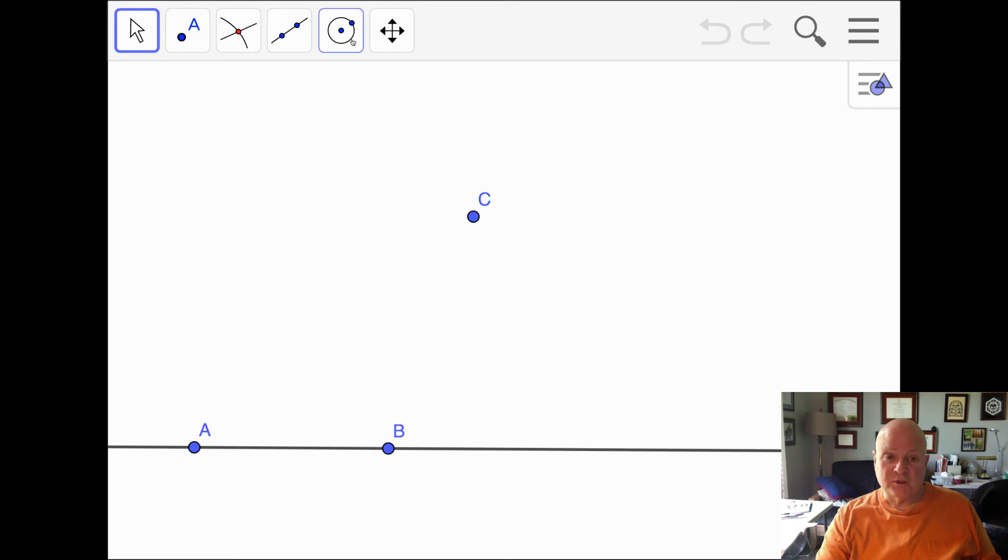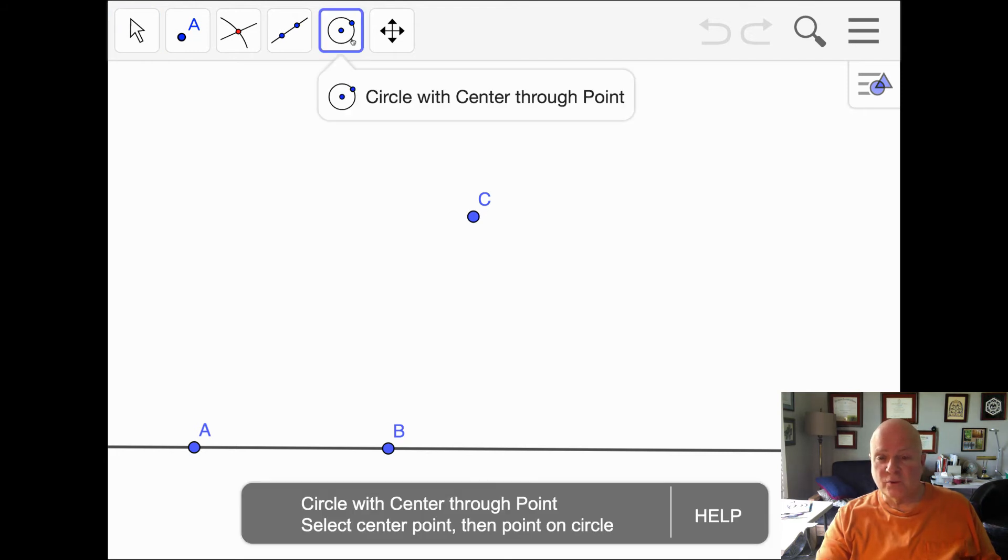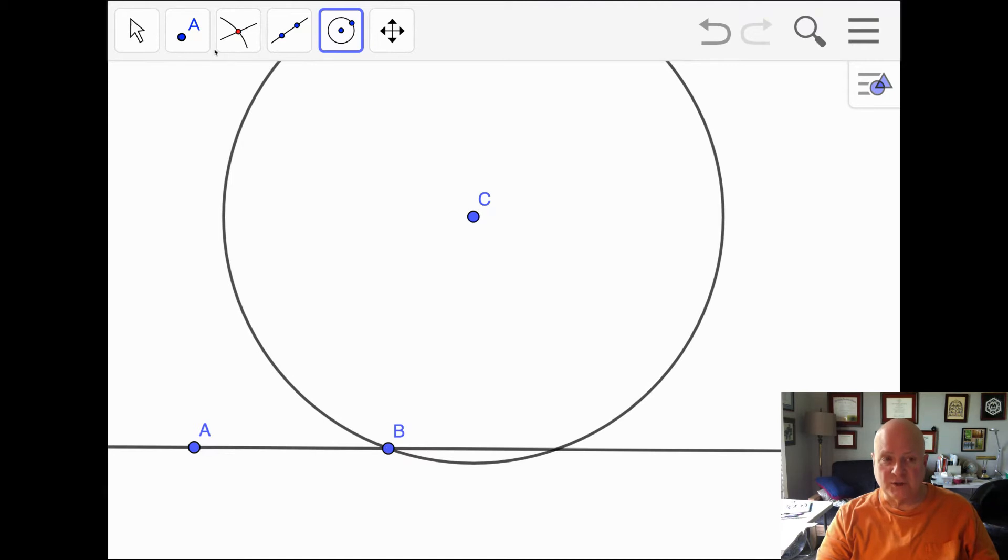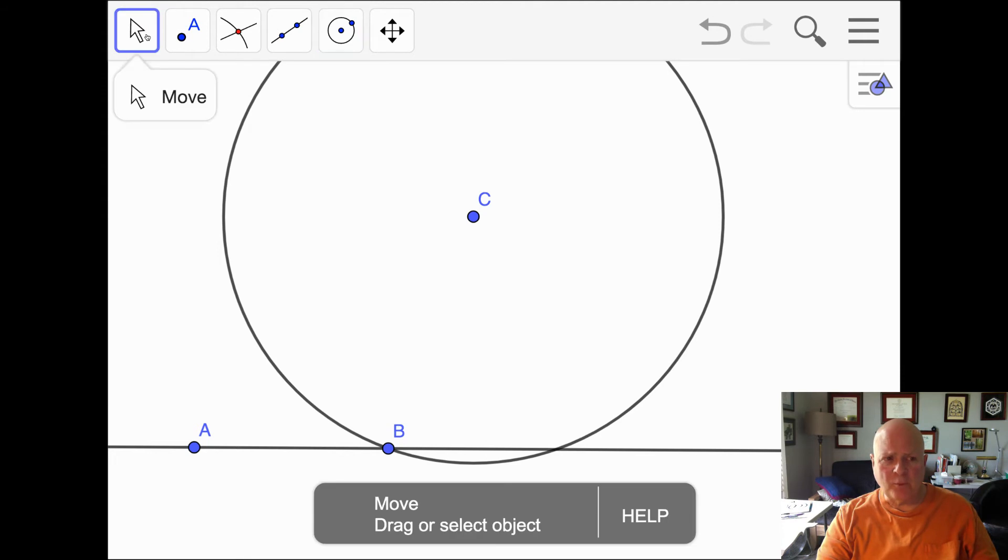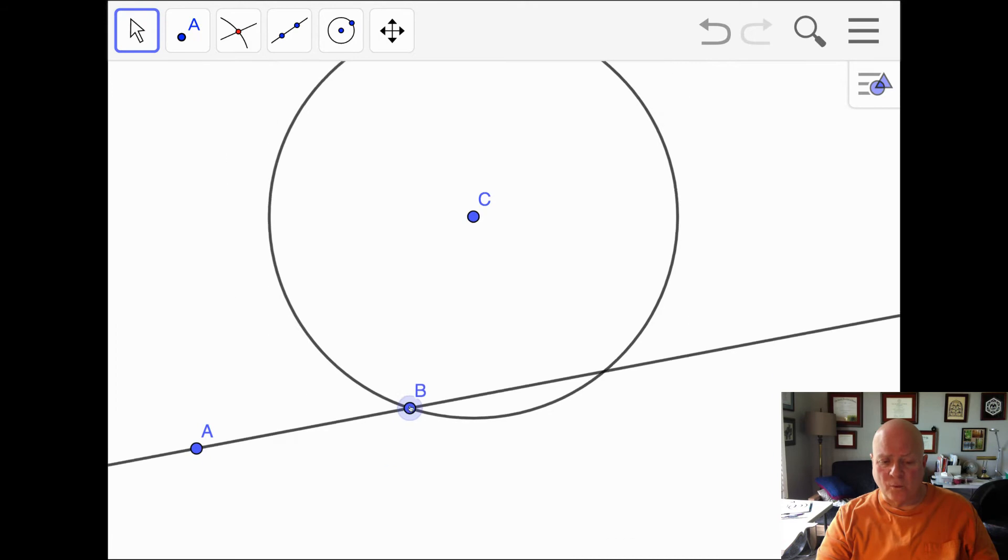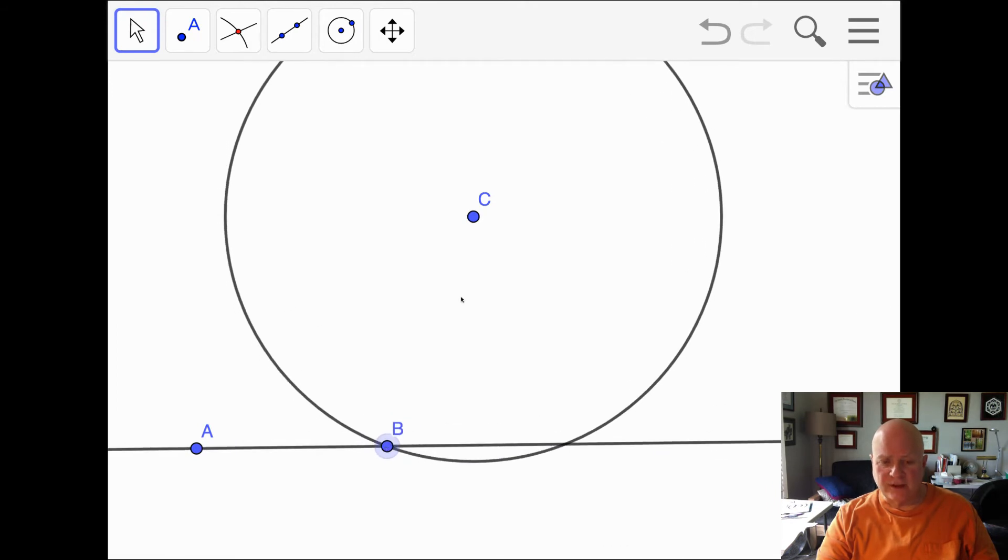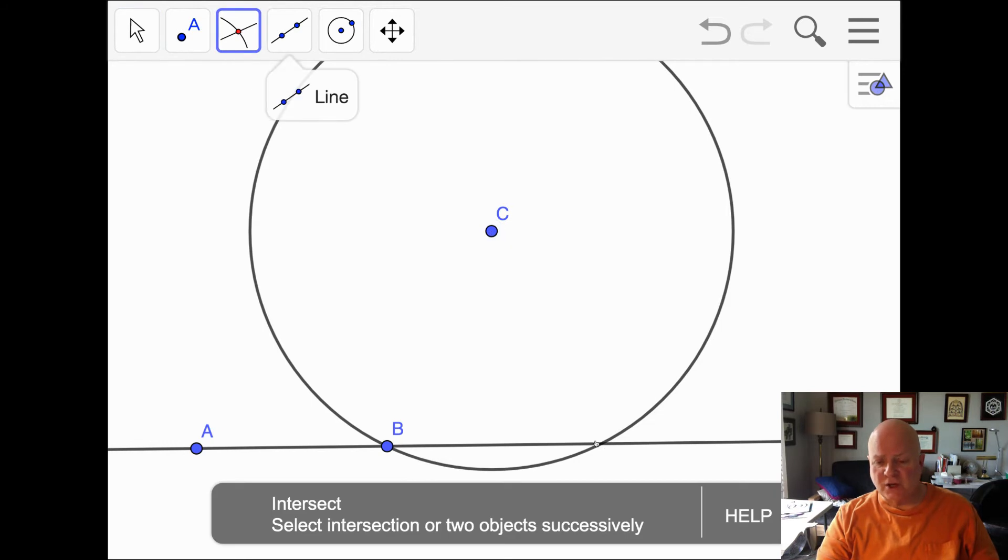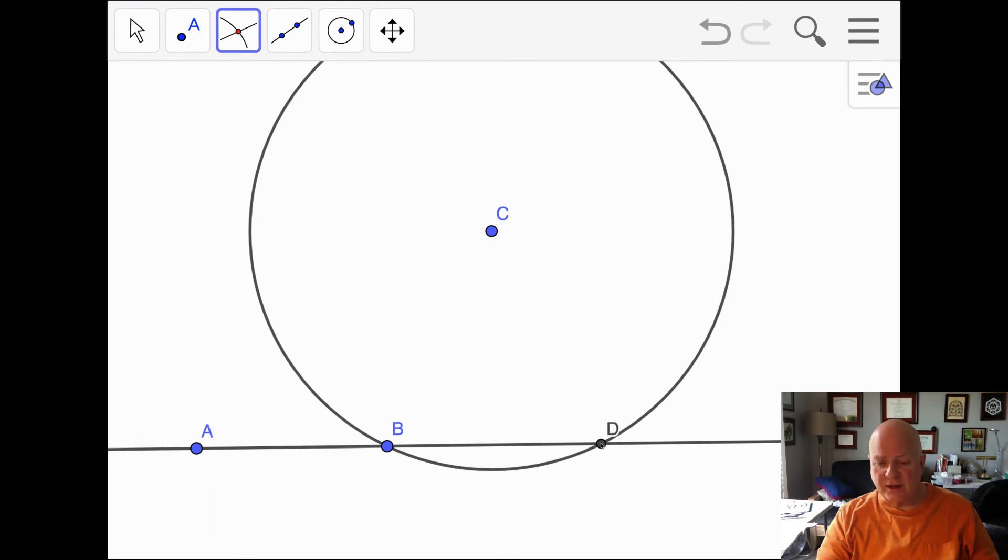So we'll start with this tool, a center through a point that goes through the center and it goes through a point. I'm going to drag from point C to point B and this gives me a center of C and a point B on the line. Now points A and B are independent. They do not depend on anything. Point C is independent. You can move it anywhere. But this intersection of the circle and the original line point D is dependent. That's why it's black.